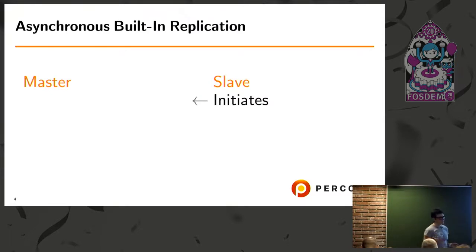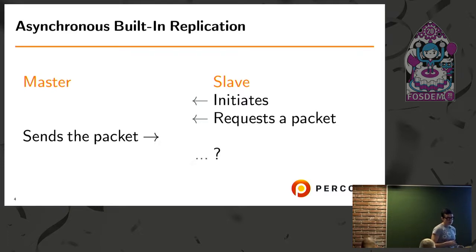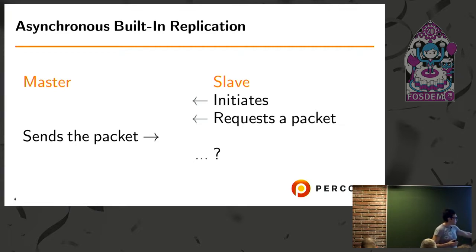First, what is the issue with asynchronous replication? Let's remind ourselves how it works. The slave initiates replication — it asks for updates from the master to apply on its side. The master reads the update from binary logs and sends the packet. At this time, the master doesn't know if the slave received the packet, if it was stored successfully, or if the update happened without error — whether it's the same data as on master. There are options which allow some control.